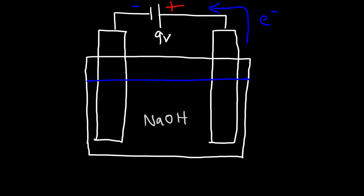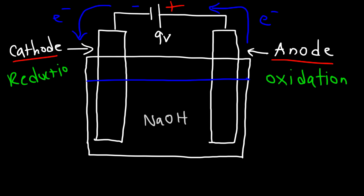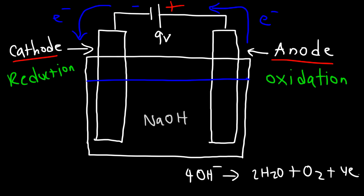Once I connect the battery, electrons will flow towards the positive terminal and away from the negative terminal. In an electrochemical cell, electrons flow from the anode to the cathode, which means the electrode on the right represents the anode and the electrode on the left represents the cathode. Oxidation always occurs at the anode and reduction always occurs at the cathode. At the anode, hydroxide is oxidized into water and oxygen gas, giving off four electrons in this process.